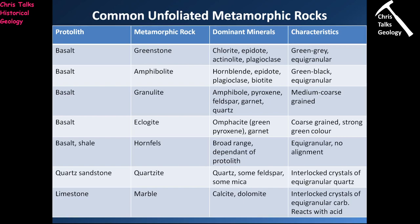The reason quartzites and marbles don't have a foliation is that the crystals in sandstone and limestone are not platy like a piece of paper or elongate like a pencil. Foliation requires crystals with the correct shape to align. The quartz crystals in quartzite and calcite crystals in limestone don't have those properties, so even under high pressures and temperatures they show no mineral alignment. Don't think marbles and quartzites are exclusively contact metamorphic rocks - they can also occur in regional metamorphic settings.